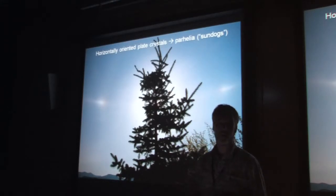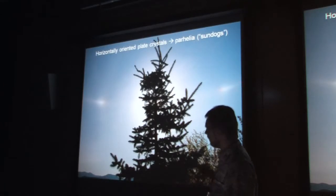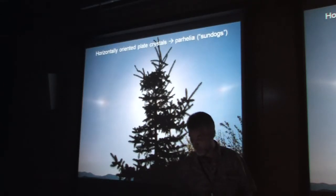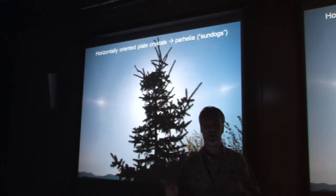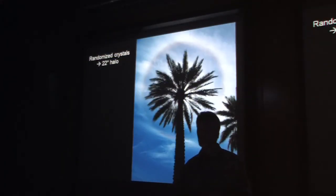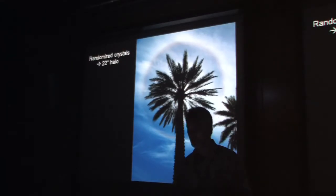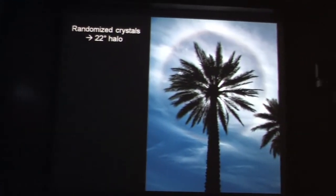A rainbow will be twice the angular size of a halo. That's the sun dog, or parhelion. If you randomize the orientation of those hexagonal plates, you can spin that same pattern around in a circle and create a halo. This is a picture of a halo I photographed in Tucson, centered around a palm tree.